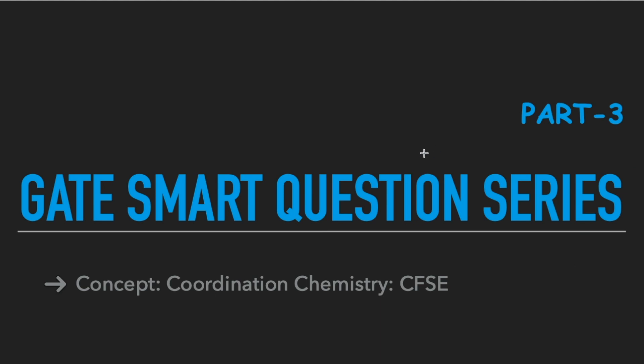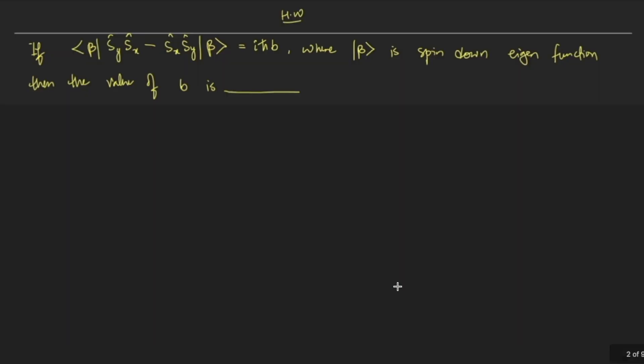Hey guys, hello everyone and welcome to the channel. Welcome to the third part of the GATE Smart Question Series. Today's question is from coordination chemistry, particularly the CFSE and pairing energy concept. In the previous class, I discussed a question on commutation, and I received your answers — many of you answered it correctly, so that was the homework question.